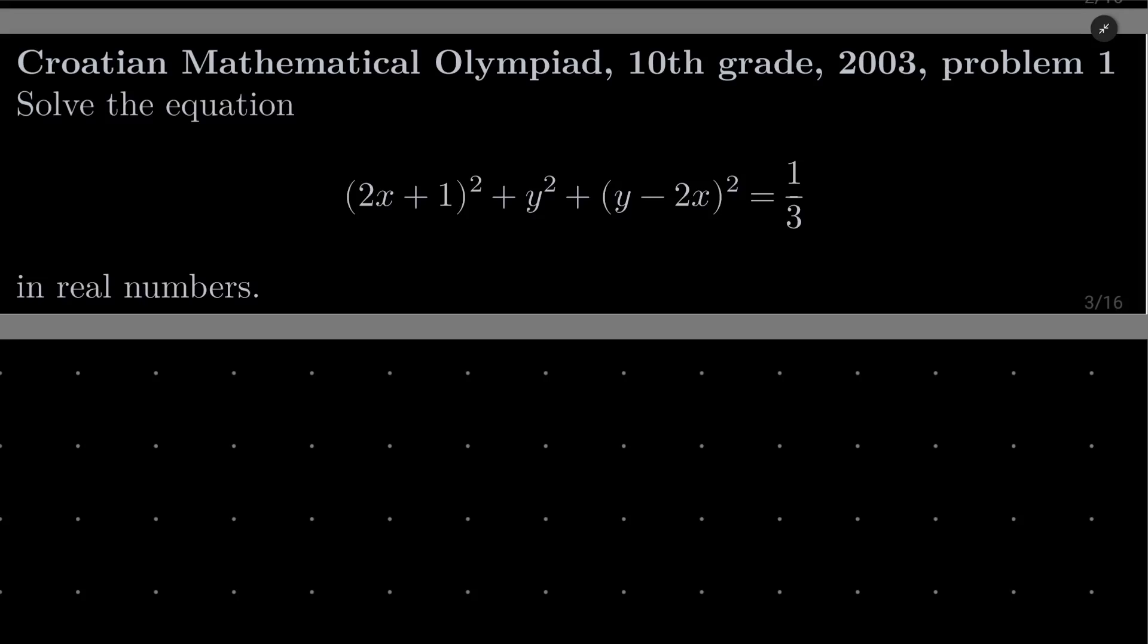Hello friends, in this video I'd like to solve the following problem from the Croatian Mathematical Olympiad, 10th grade, 2003, problem number one. We wish to solve the following equation: (2x + 1)² + y² + (y - 2x)² equals one third.